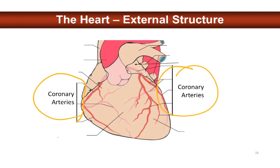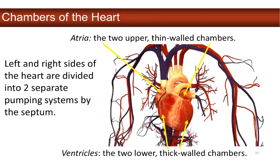The blood vessels that serve the heart are the coronary arteries. When we talk about the body of the heart, there are two atria, which are the upper thin-walled chambers divided by an interatrial septum or wall, and there are two ventricles, which are the thicker chambers at the bottom of the heart, separated by an interventricular septum. 'Septum' is a general word for wall. You essentially have two separate pumping systems within the same organ, and their function is coordinated.